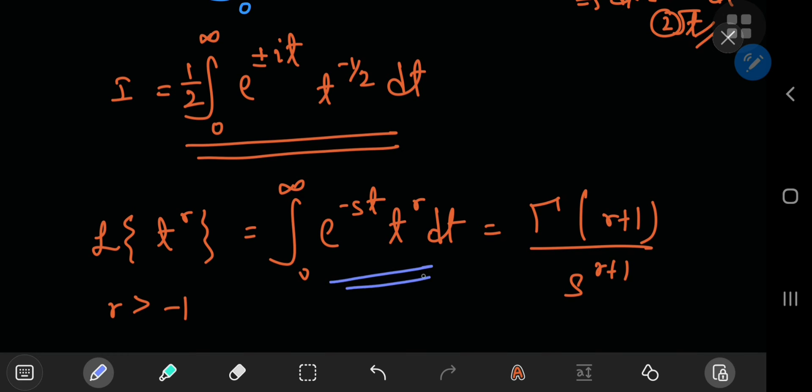to the gamma function of r plus 1 divided by s to the r plus 1. Immediately, we notice that the Laplace transform does a pretty good job of sorting out our integration. So we have t to the negative 1 half. So that means r equals negative 1 by 2. Okay, cool.